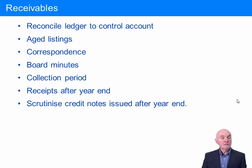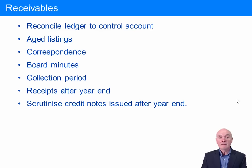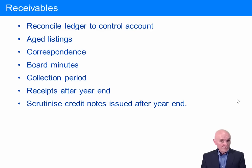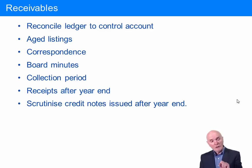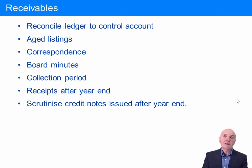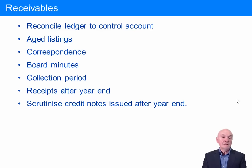Board minutes are important to scrutinize, because any large debt the board is worried about should be discussed there. The board should be discussing all large material transactions, and a major customer on the verge of liquidation you'd expect to see talked about at the board. The collection period — days of receivables — is also important: you calculate it by dividing the receivables balance by sales per day. If one year it is 40 days and the next year it is 90 days, you get worried. Why are they not collecting these debts? Are they sending out incorrect invoices? Has their credit control department fallen apart? Or is an economic recession putting all the client's customers in trouble such that the debts may never be repaid?